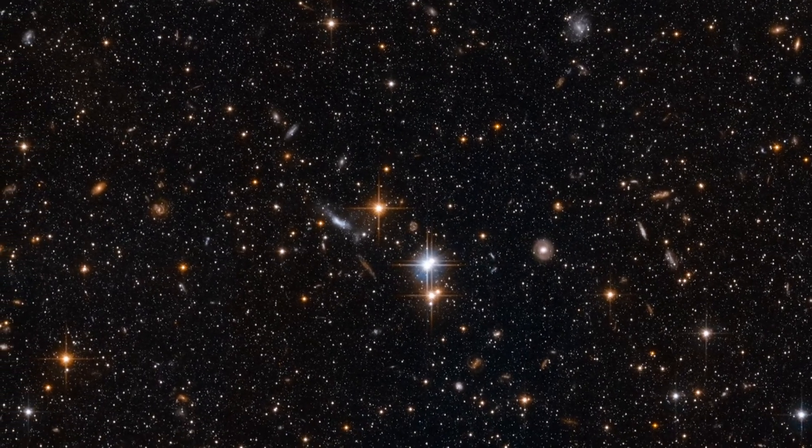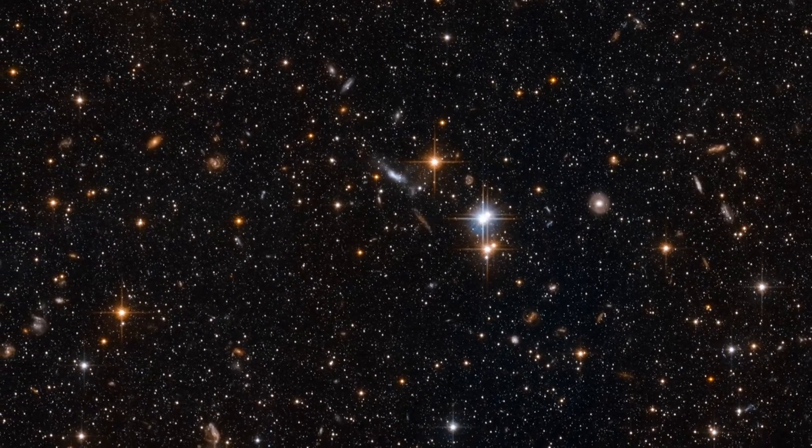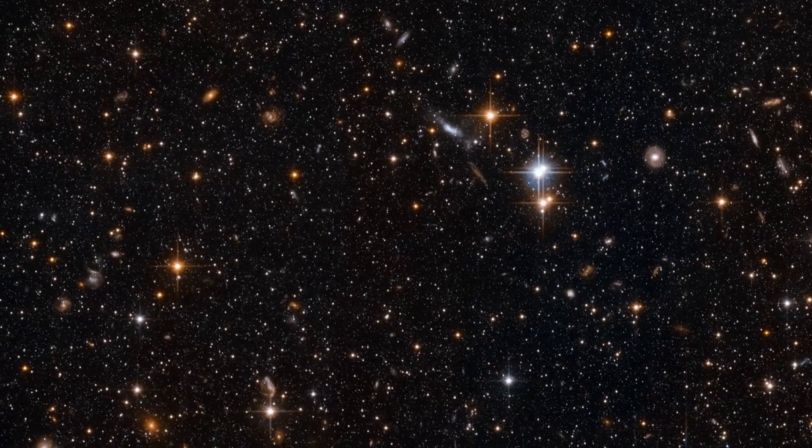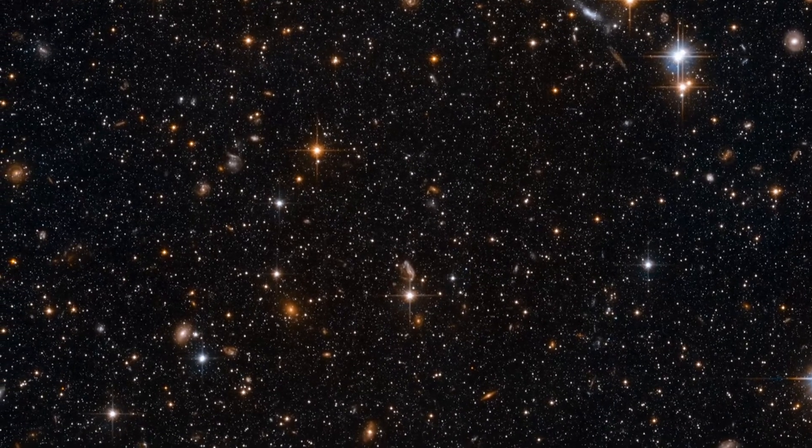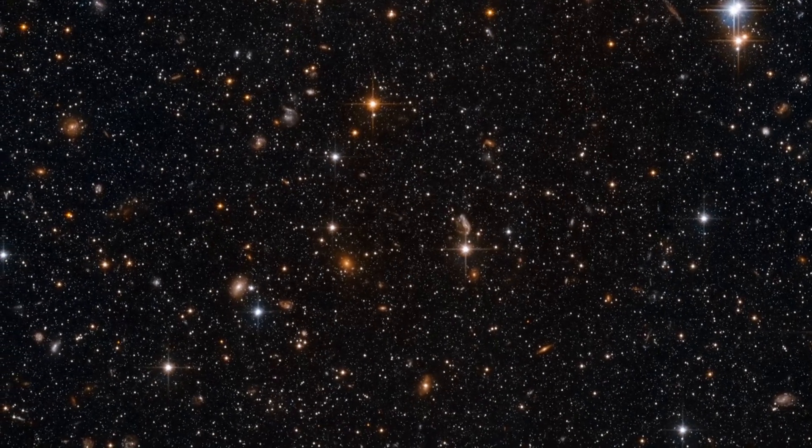Busy as these images look, we're only in the outskirts of the Andromeda galaxy here. That's because these observations were made in order to study a particular type of variable star that is common in the outer reaches of galaxies.